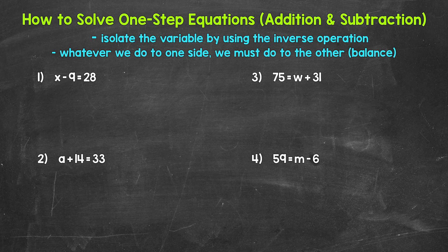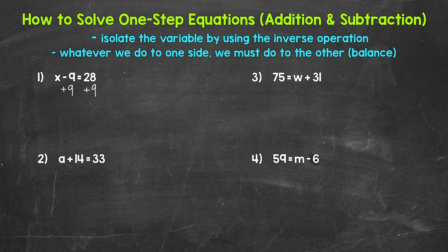We are subtracting 9 from x. We need to undo that subtraction by using the inverse operation. What's the inverse or opposite of subtraction? Well, addition. So we need to add 9 to the left side of the equation. Remember, whatever we do to one side of an equation, we must do to the other in order to keep everything balanced and equivalent. So we need to add 9 to the right side as well. On the left side of the equation, we are subtracting 9 and adding 9, so these 9s cancel each other out, and our variable x is now isolated.